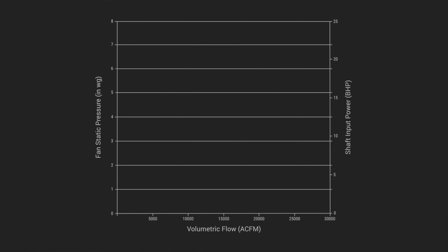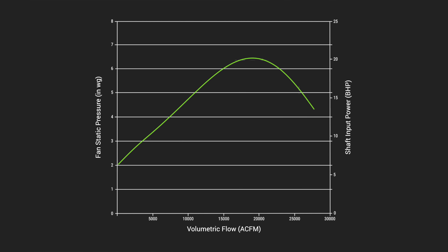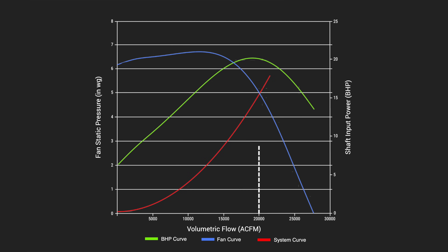A fan curve also shows the amount of power a fan uses when running at a given operating point. This data is represented as another curve called the brake horsepower curve. To determine power consumption at a given operating point, follow the intersection of the fan curve and system curve to the corresponding point on the brake horsepower curve, then straight across to the secondary y-axis on the right.